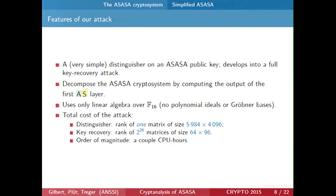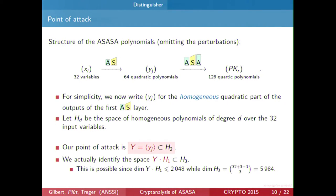We give this attack in two parts: first, a very simple distinguisher, and then we explain how this distinguisher develops into a full key-recovery attack. This is a decomposition attack — we compute the middle layer, the output of the first AS layer. The tools we use are only linear algebra, no Gröbner bases today. The total cost of the attack is very low: the distinguisher is only the rank of one big matrix, and the key recovery is the rank of 60 million small matrices — about a couple of CPU hours.